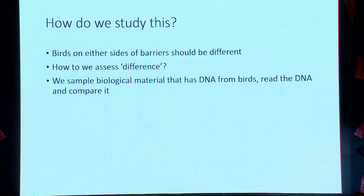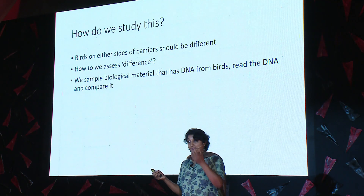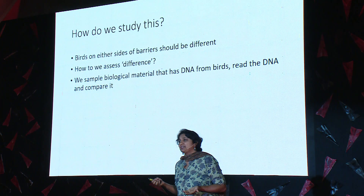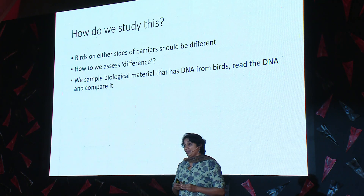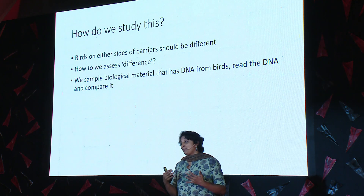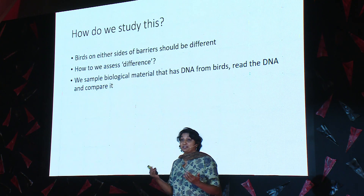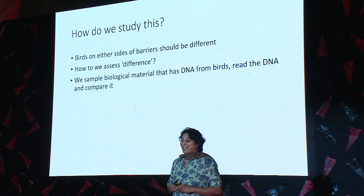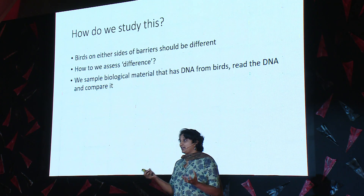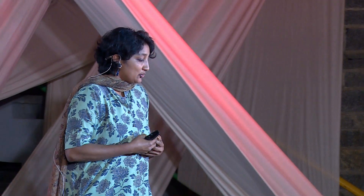How do we study this? We would expect that birds which live on mountain tops on either side of these gaps should be different. But how do we assess whether they are different? Luckily for us, the story of the past of those birds is actually written in their DNA. So if we could read and compare the DNA of the birds, we could tell how different or similar they are. What we have to do then is go to the Western Ghats, catch these birds, sample their DNA, and try to understand how different they are.